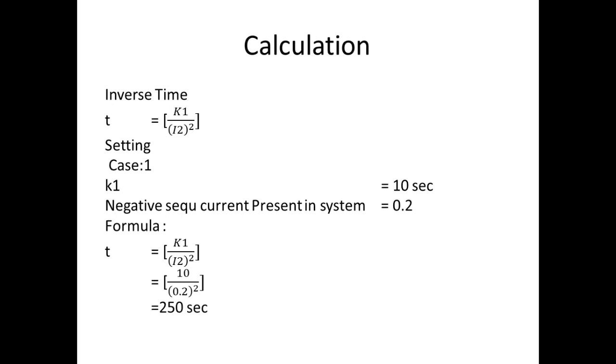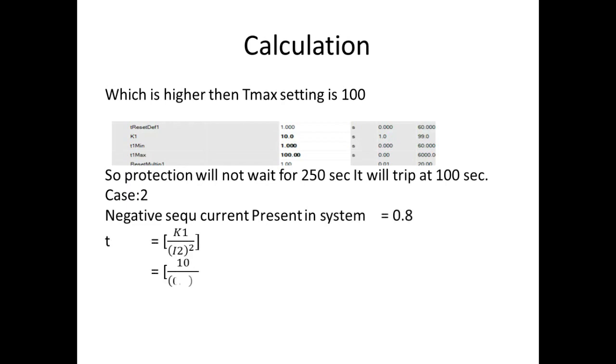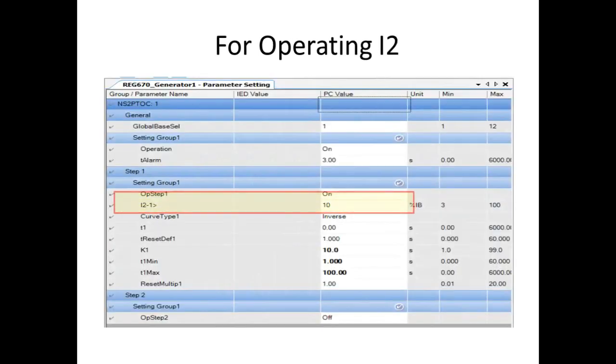If we look at the T-Max curve, we have 100 seconds. So, we wait for 250 seconds. If we reach 100 seconds, we will trip. Now, let's look at Case 2. Case 2 is 0.8 negative sequence. In this case, the Trip Time is 15.62 seconds. So, for the Calculated Time, we will follow the Calculation Value. For the protection operator, we have the Pickup Value and the Curve, that is the range.